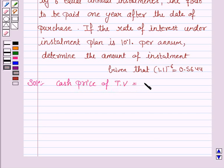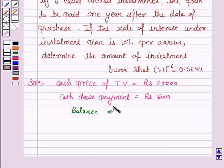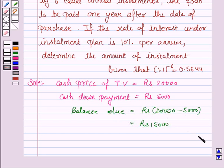The cash price of the television is rupees 20,000 and the cash down payment is rupees 5,000. So the balance due will be rupees 20,000 minus 5,000, which is equal to rupees 15,000.